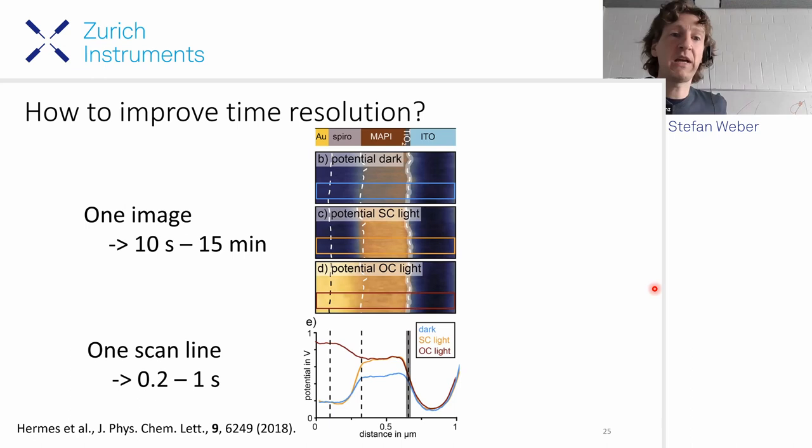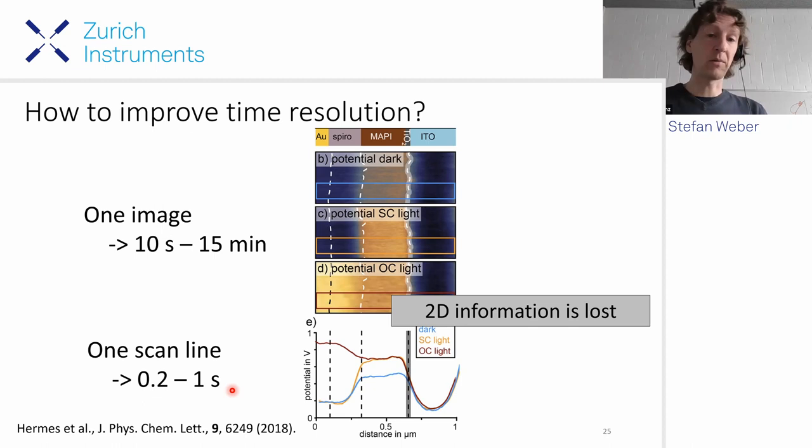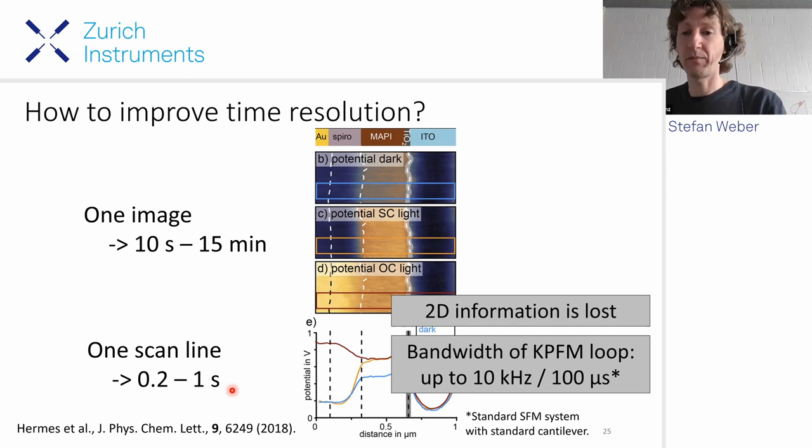But I was talking about hysteresis and slow processes on timescales of milliseconds to seconds. To record such an image takes, if you scan really fast compromising image quality, 10 seconds. But for proper image you need at least 10-15 minutes. We're just interested in the profile of the potential, so we could look at one scan line, but that will still take 1.2 to one second. And it has important disadvantages: you're not completely decoupling dynamic effects from scanning motion, you lose 2D information, and most importantly you waste lots of bandwidth. With standard systems you can easily reach 10 kilohertz or 100 microsecond time resolution with Kelvin probe, which is all wasted when you do scanning.